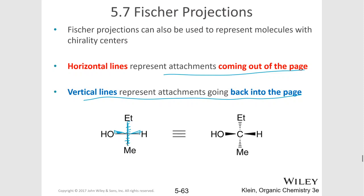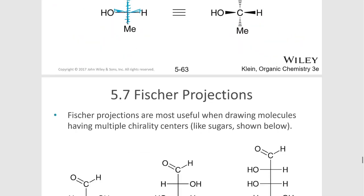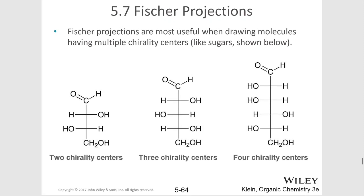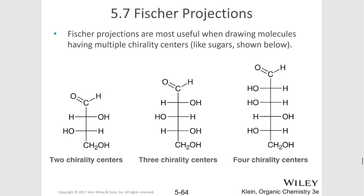Biochemists prefer this method for sugars. The Fischer projection on the left is the same as the molecule on the right. Molecules that have multiple chirality centers, like these sugars, can be drawn very quickly with a Fischer projection. Remember, the vertical is going away, and on the horizontal, everything is coming out at you.